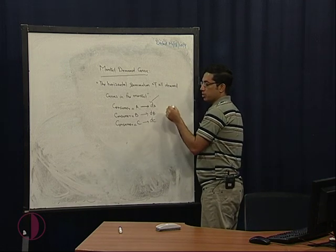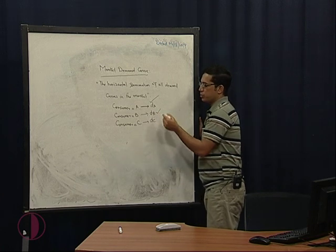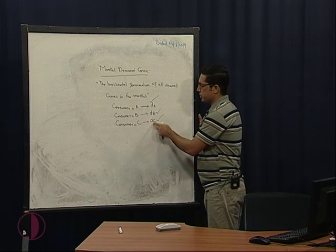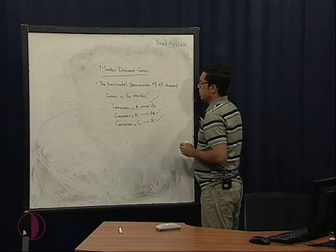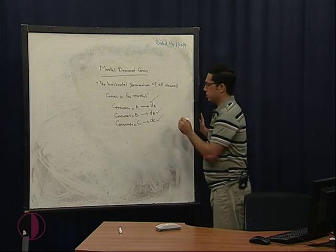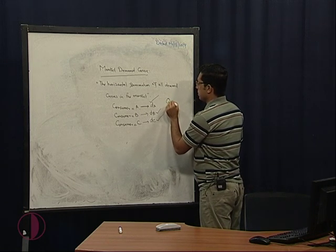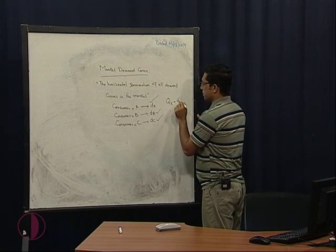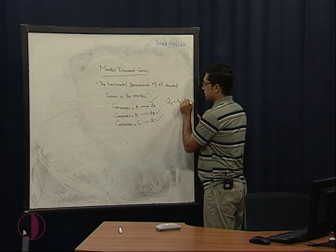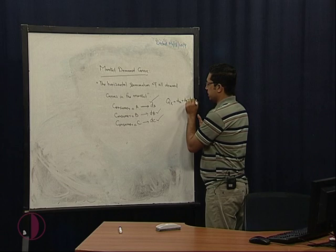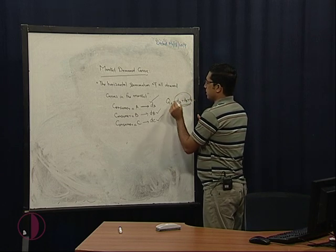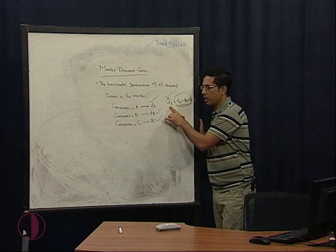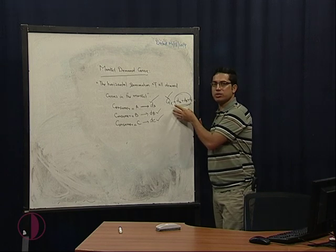This is the individual demand for Consumer A, this is the individual demand for Consumer B, and similarly, this is the individual demand for Consumer C. So for the market demand — that is quantity of X — this will be D_A plus D_B plus D_C. This is known as the market demand.